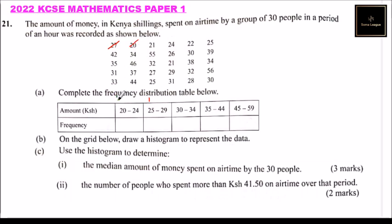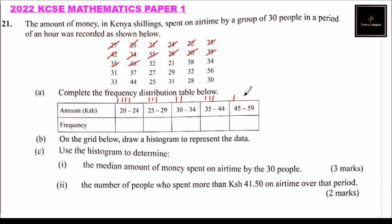20 goes here, 21 goes there, 24 goes there, 22 goes there, 25 goes there. 42 is in the 40–44 class, 34 goes here, 55 goes there, 26 goes here, 30 goes here.